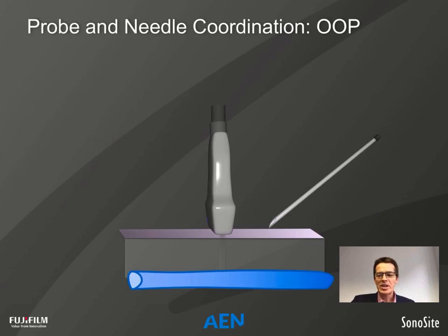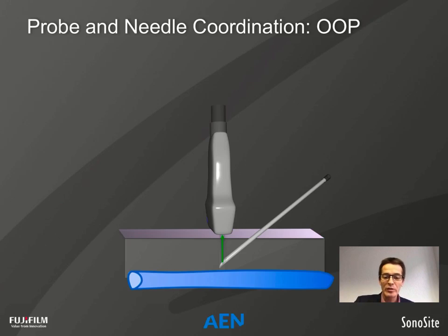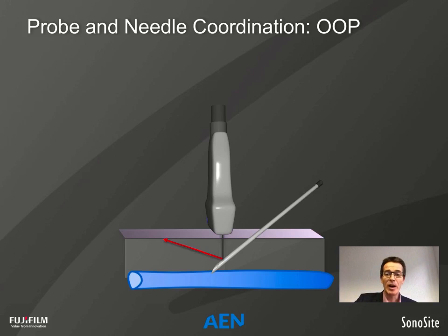Let's go over some basic probe handling methods. In an out-of-plane procedure, we recommend directing the bevel of the needle towards the probe. Once the needle enters the scanning plane, the bevel creates good reflection of sound waves back to the probe. If you direct the bevel downwards, or insert the needle too steeply, part of the sound is reflected away from the probe, giving a poor ultrasound image. Bevel up is important in out-of-plane procedures.